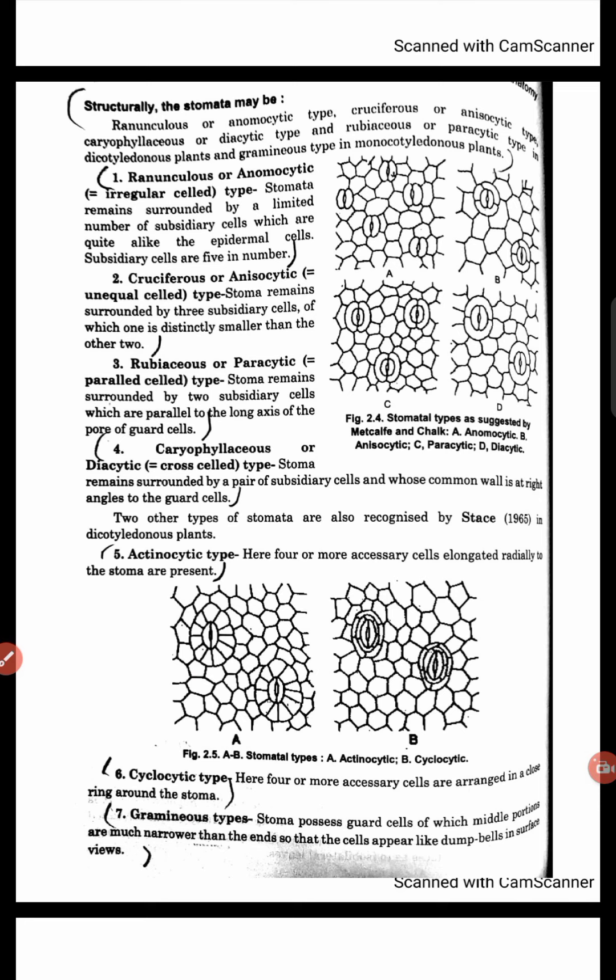Sixth type: Cyclocytic. Here we see four or more subsidiary cells arranged in a closed ring form around the stomata.